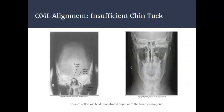In the Towne method projection we want the OML perpendicular to the IR, but in the case that the chin is insufficiently tucked, the dorsum sellae will be demonstrated superior to the foramen magnum. When that occurs, you need to realign the OML so it is perpendicular to the IR.